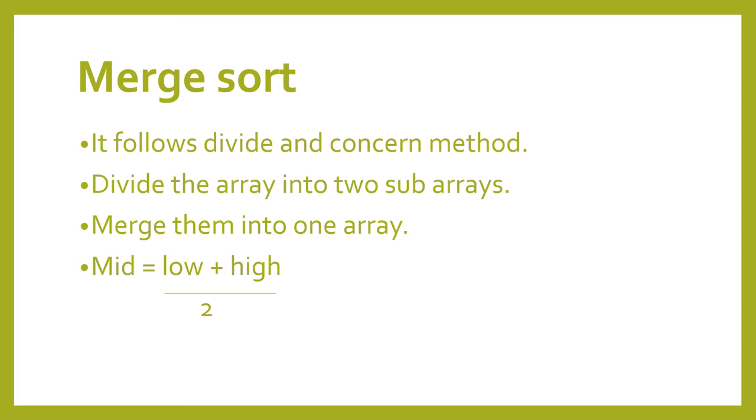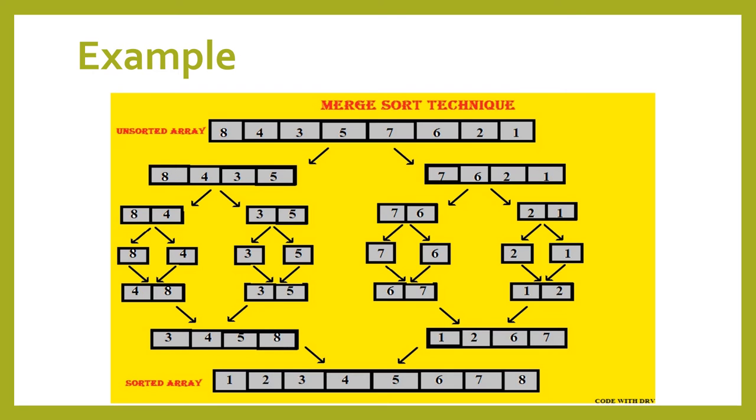In an array, low is the lowest index value and high is the highest index value. By knowing the mid value, we can divide the array into two subarrays. Now let's see an example.